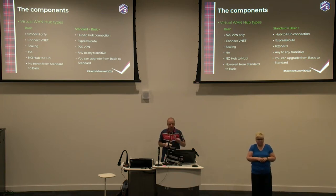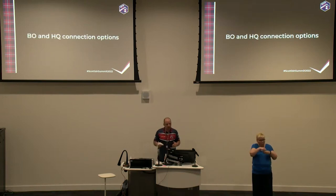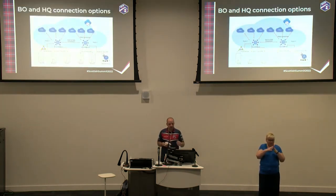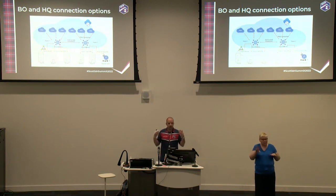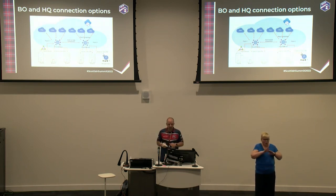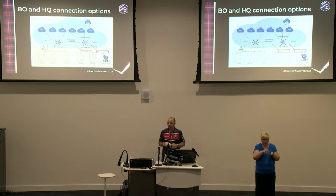Now let's talk about options for connecting branch offices and headquarters to Virtual WAN. In a multi-region Virtual WAN solution with Region 1, Region 2, and virtual networks connected from Azure, you have three options: Option 1 — site-to-site VPN; Option 2 — point-to-site VPN; Option 3 — ExpressRoute.